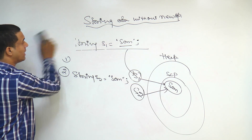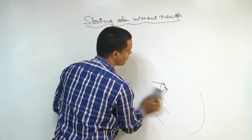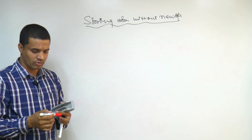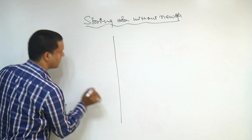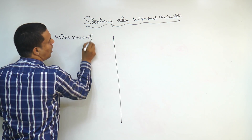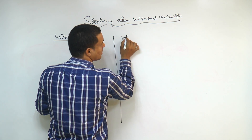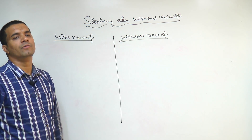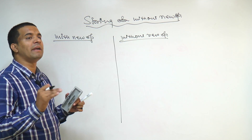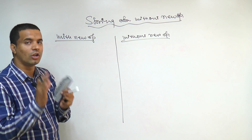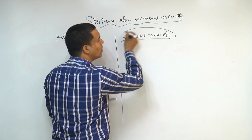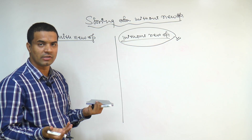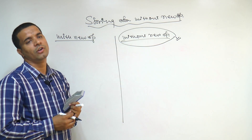Now, one more very clear point: you know both ways — creating a string object with the new operator and without the new operator. It is always recommendable to create the string object without the new operator. Why? Because it takes less memory and objects are reusable. So, we should always create string objects without the new operator.